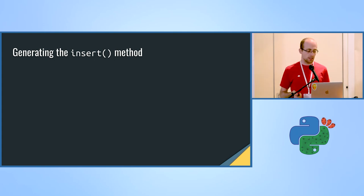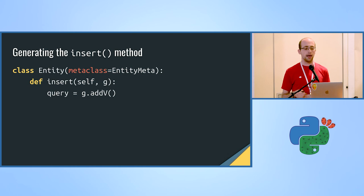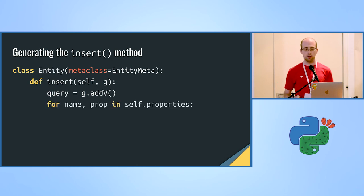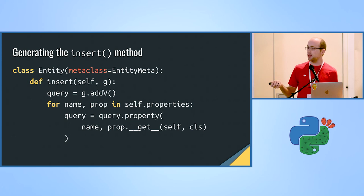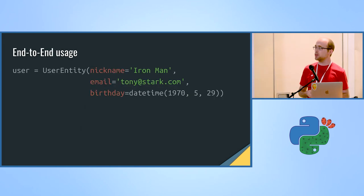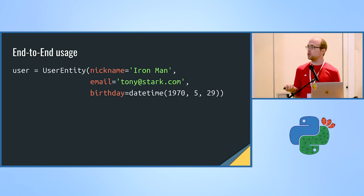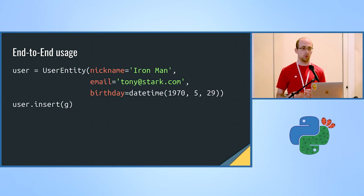Finally, we generate the insert method. We have the Entity class and define an insert method that receives the root of the graph we want to insert to. We create a new query of type addVertex, then for every property defined on the class-level properties, we make a call to the property call of the query, specifying the name and fetching the value via the descriptor. Finally we call query.run — that's it, no boilerplate whatsoever — all queries generated automatically for all types of objects. The end-to-end usage: define a User class, get the constructor automatically, get the insert method, and no manual Gremlin boilerplate.